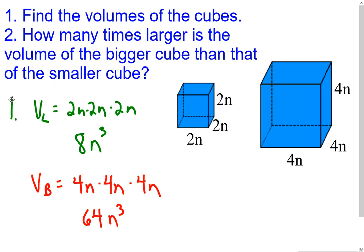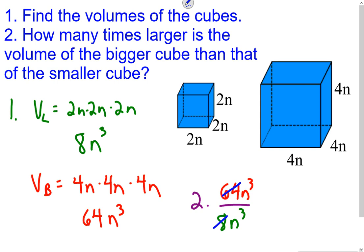To find that, we take the volume of the larger cube — 64n³ — and divide it by the volume of the smaller cube, which is 8n³, and simplify. 64 divided by 8 equals 8, and n³ divided by n³ equals 1, so our final answer is 8. The volume of the larger cube is 8 times bigger than the volume of the smaller cube. We'll come back to this in just a little bit.